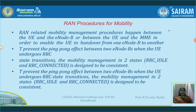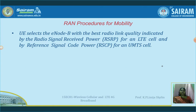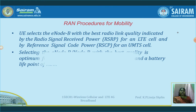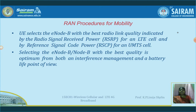We are using two eNodeBs when the user equipment goes through transition modes. We are using a term as Radio Signal Received Power (RSRP) for an LTE cell. The best radio link quality will be identified by the RSRP — the best radio signal received power indicates the best radio link quality. And for UMTS, the best radio link quality is indicated by the Reference Signal Code Power (RSCP). With this best quality, we are going to select the eNodeB or NodeB from both the interference management as well as the battery life point of view.